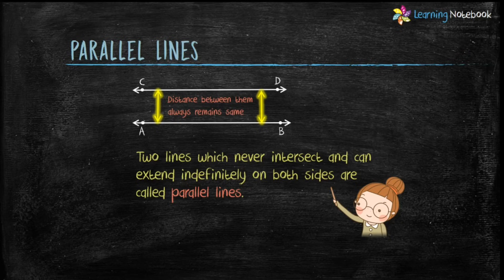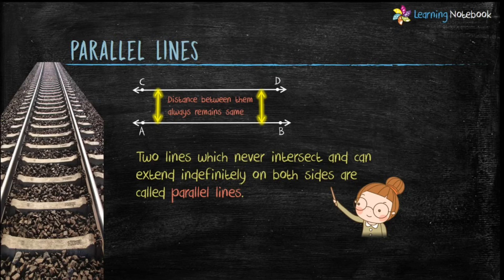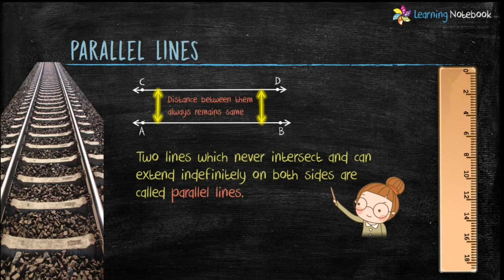Example of parallel lines is railway track which extends indefinitely on both sides and never intersect. Another example is a ruler whose long edges are parallel to each other.